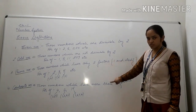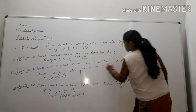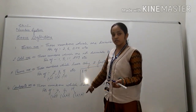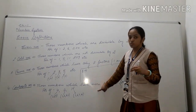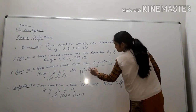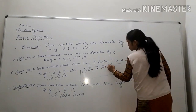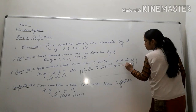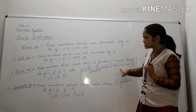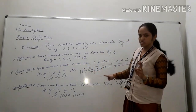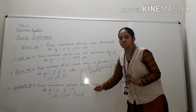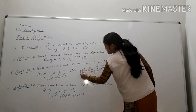After studying prime and composite numbers, a question arises: what can we say about 1? Is 1 a prime number or a composite number? Prime numbers have exactly 2 factors; composite numbers have more than 2 factors. But 1 has only 1 factor — 1 itself. So 1 is neither prime nor composite. Many students get confused and count 1 as a prime number, making their questions wrong. Please keep it in mind: 1 is known as a unique number.